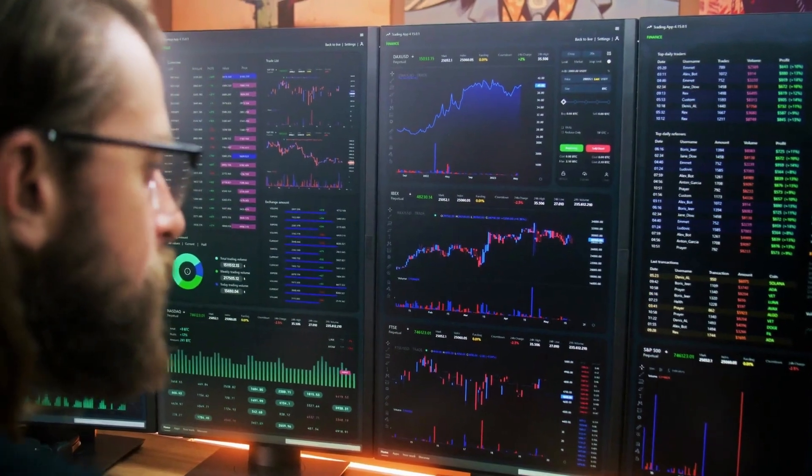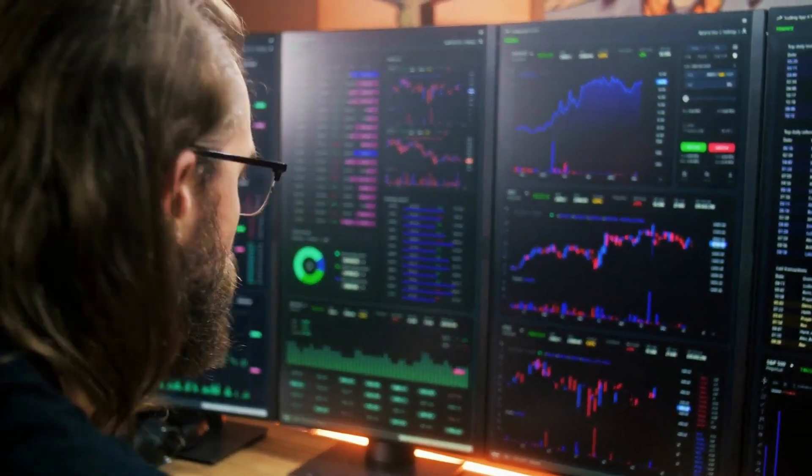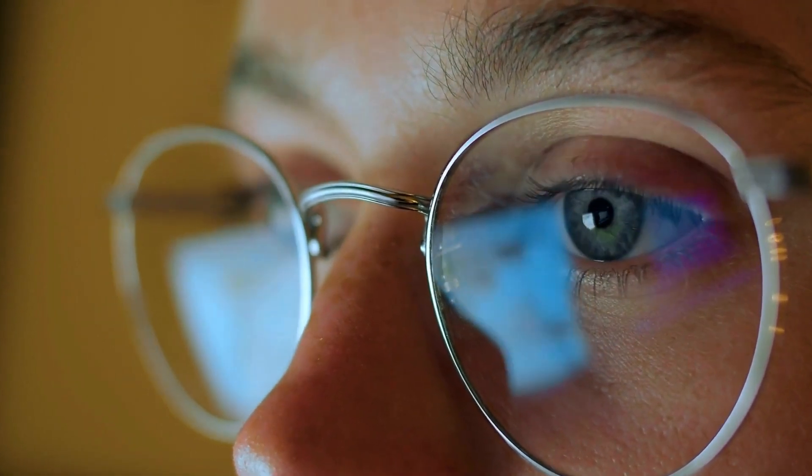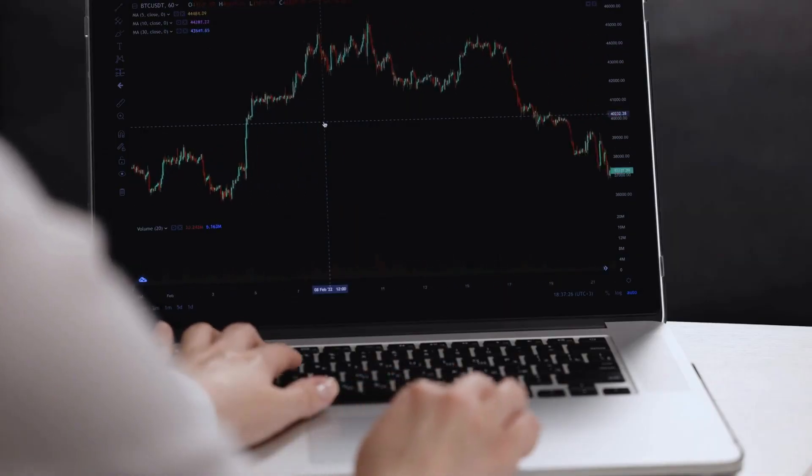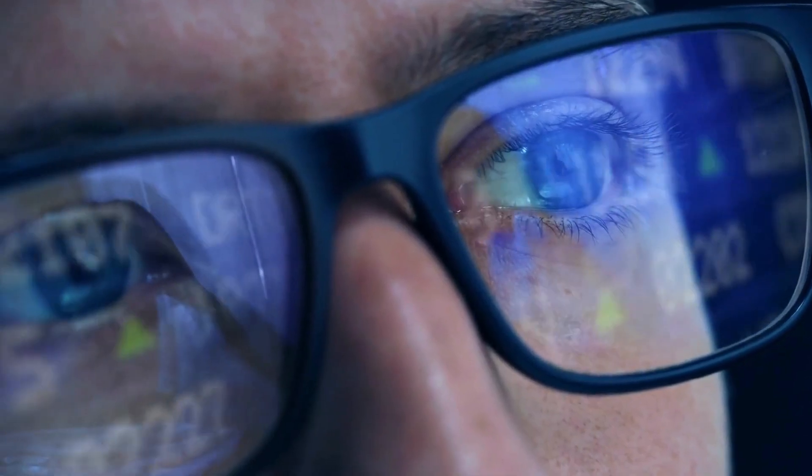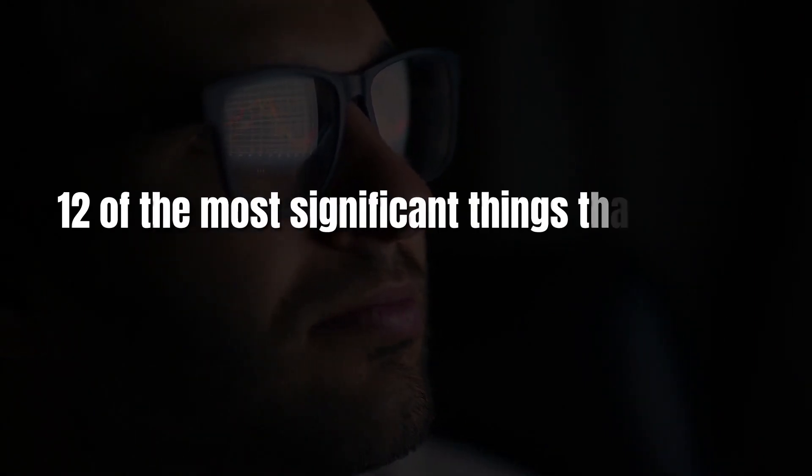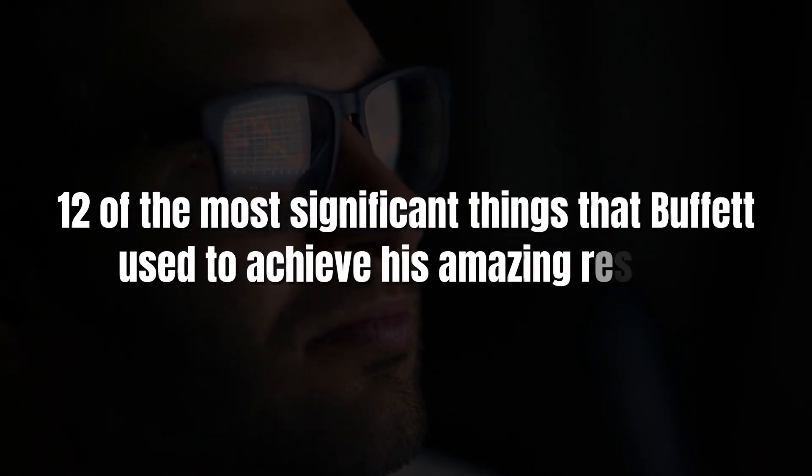As we already mentioned, one of the best ways to improve your skills in any area is by looking at what the professionals are doing. And this applies to investing as well. You can learn a great deal about the stock market just by observing his choices. Here, we'll have a look at 12 of the most significant things that Buffett used to achieve his amazing results.